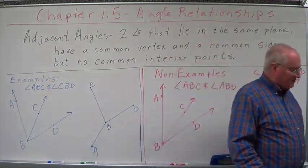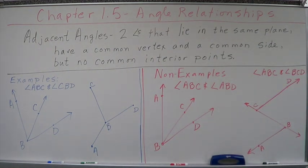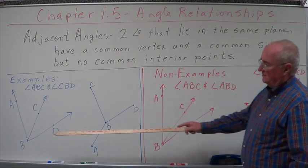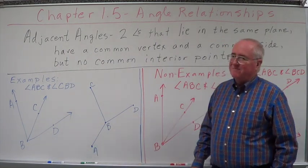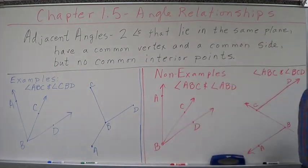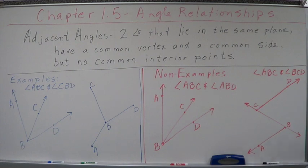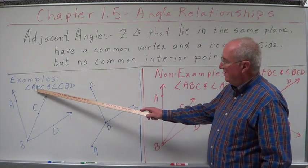Well, not lines. Line segments could be, but in this case we're looking at rays. Ray BA and ray BC make up the angle ABC. Okay? Vertex at what? B.